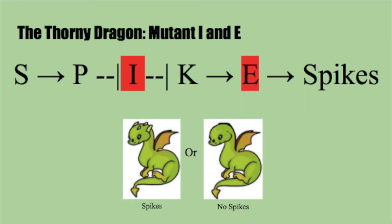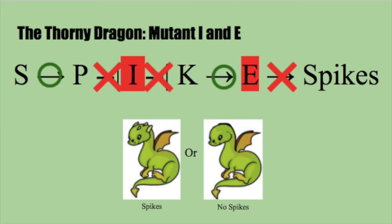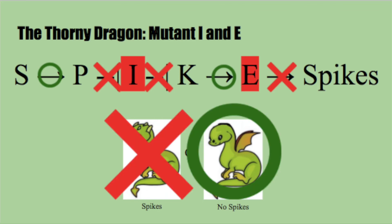Here we have the possibility of a mutation on two genes, I and E. With I removed, it no longer inhibits K. This causes K to be able to activate E, but since E has been removed, it can't do that, so this causes the dragon to have no spikes.